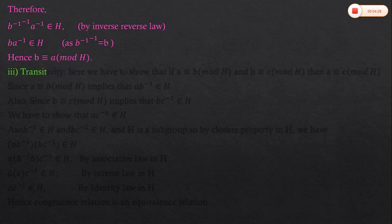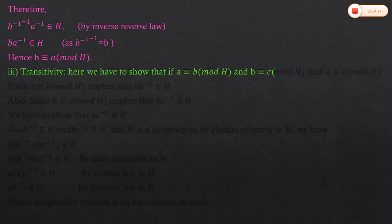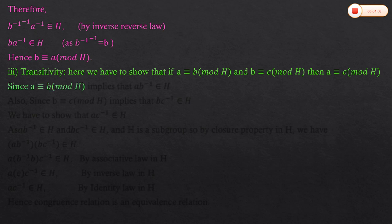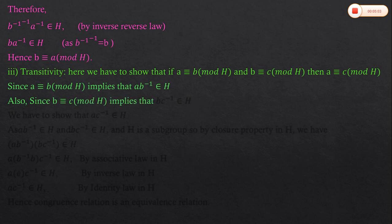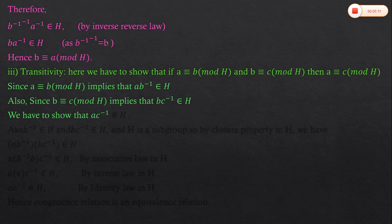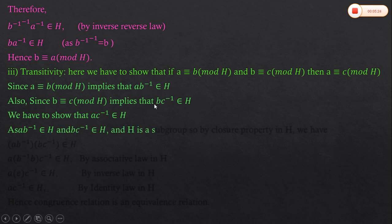Now the last condition to prove is transitivity. We have to show that if a ≡ b (mod H) and b ≡ c (mod H), then a ≡ c (mod H). Since a ≡ b (mod H), by the definition of congruence, a into b inverse belongs to H. Also, since b ≡ c (mod H), b into c inverse belongs to H. We need to show that a into c inverse belongs to H.